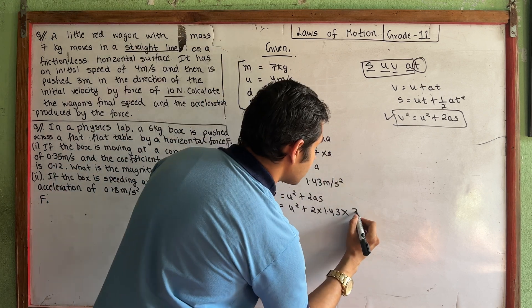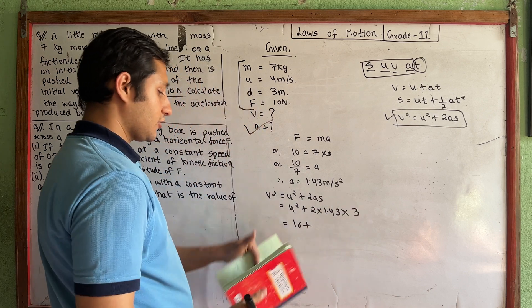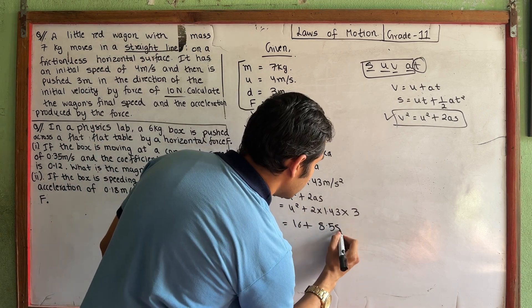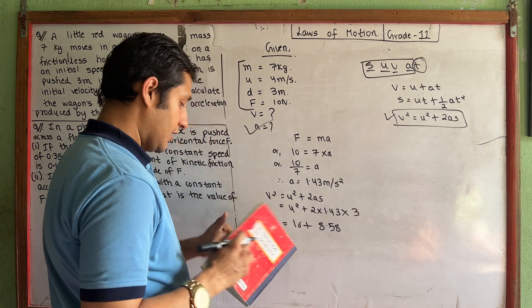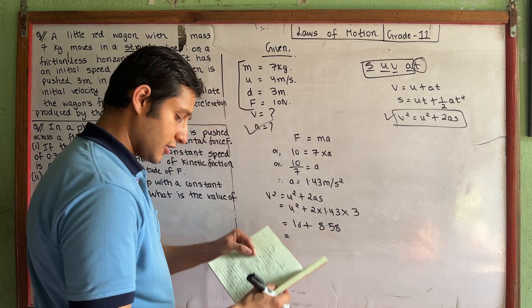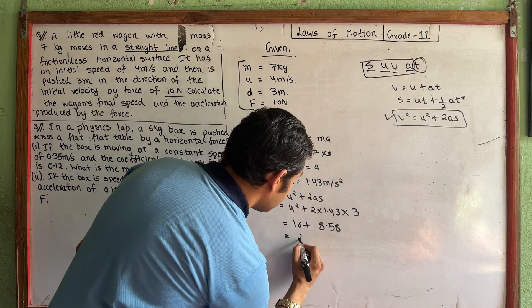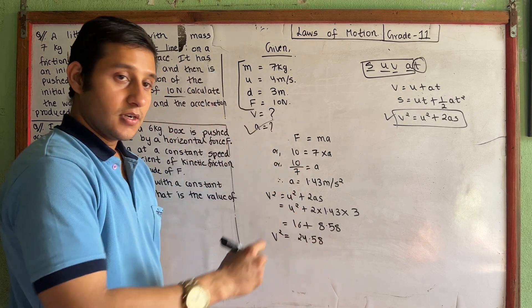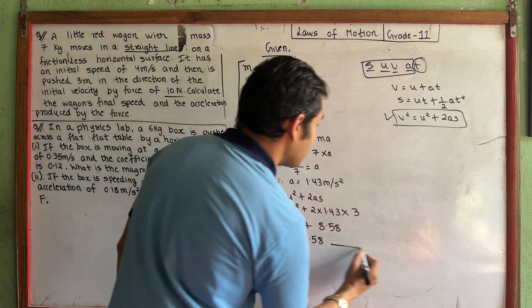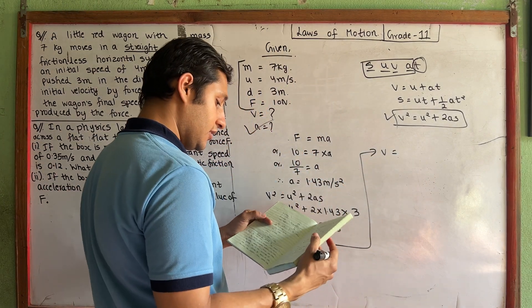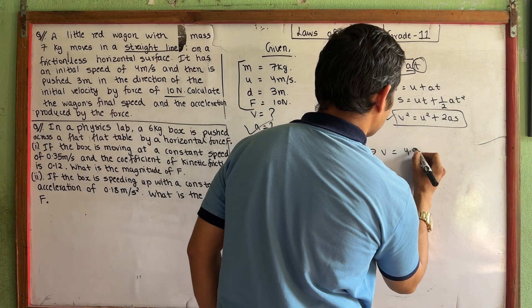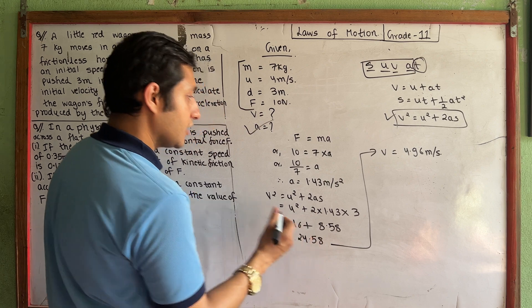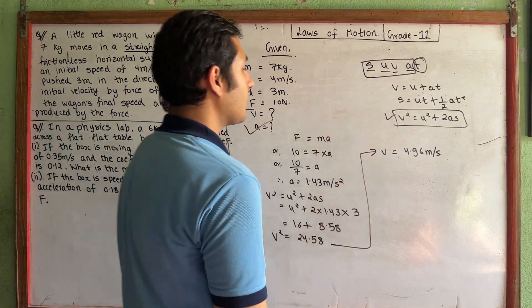So v² equals 16 plus 8.58, which gives approximately 24.58. Taking the square root, the final speed is approximately 4.96 meters per second.